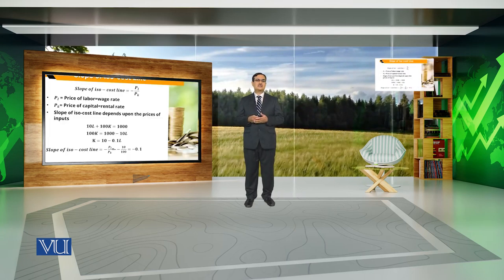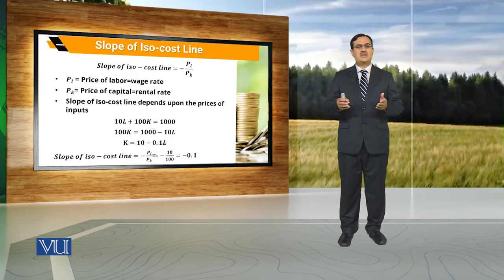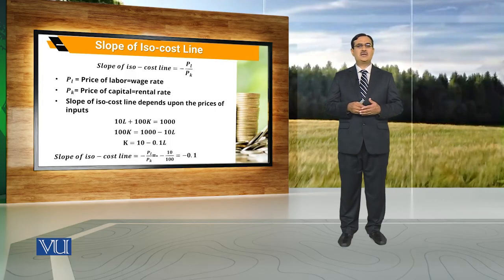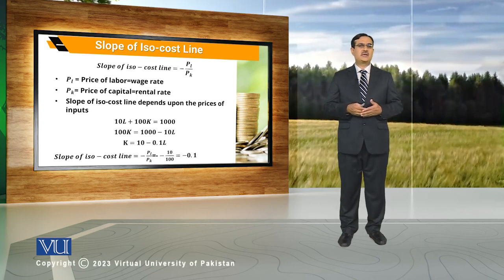जब हम slope of isocost line की बात करेंगे, slope of isocost line is in fact the negative of the price ratio of two inputs. हमारी example में हम assume कर रहे हैं कि agriculture output is a function of labor and capital, and the farmer is using an allocated amount of resources only to purchase labor and capital.